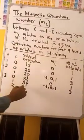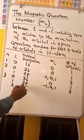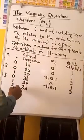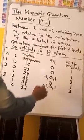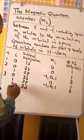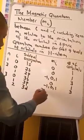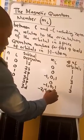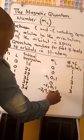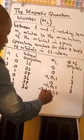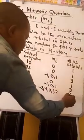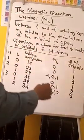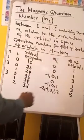When L is 2, this is 3D. The ML values in this case will be negative 2, negative 1, 0, 1, and 2. Number of orbitals: 5. So the D subshell has 5 orbitals.